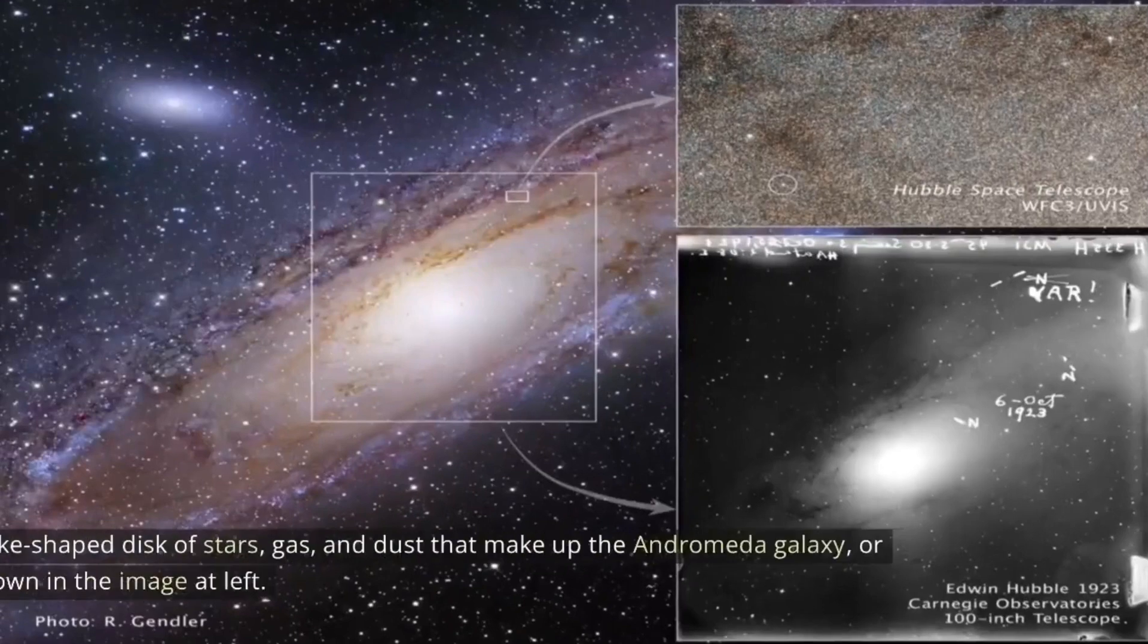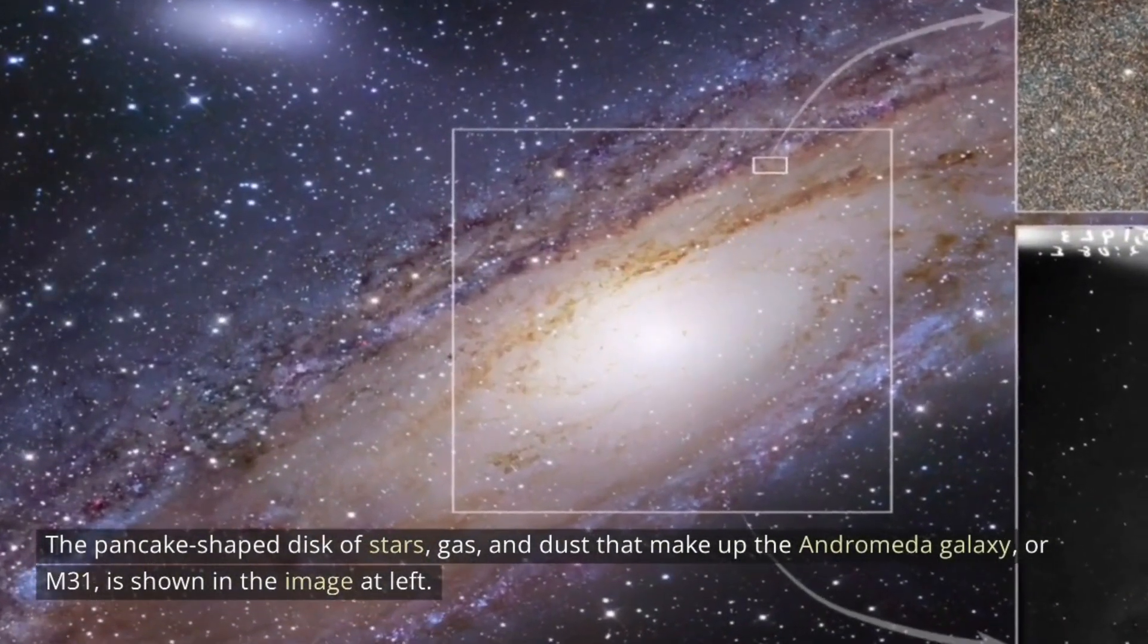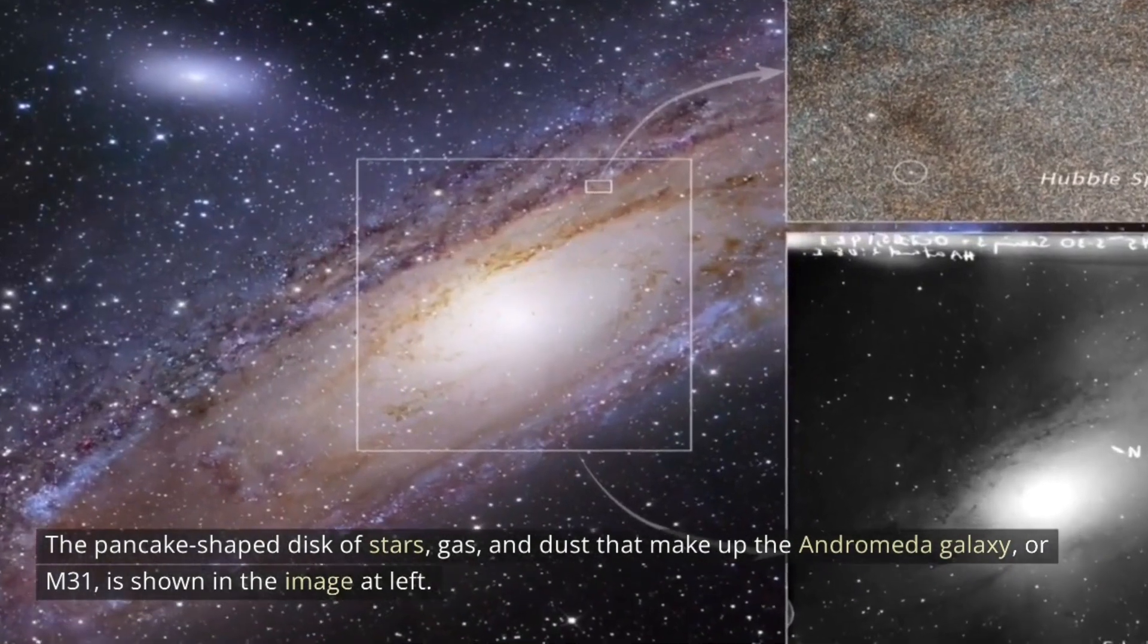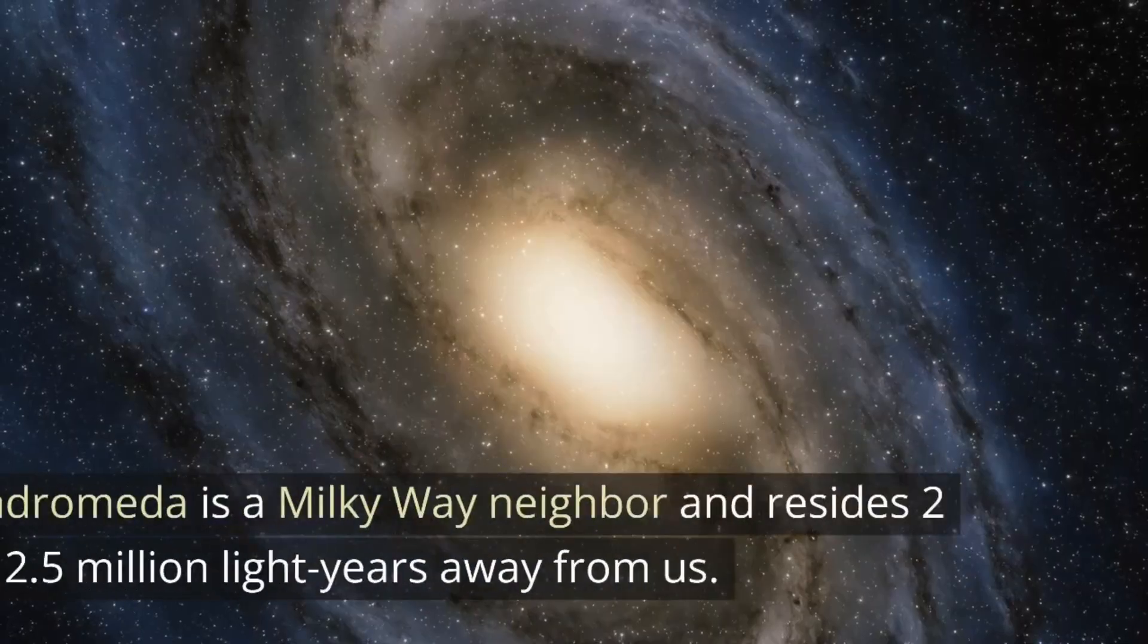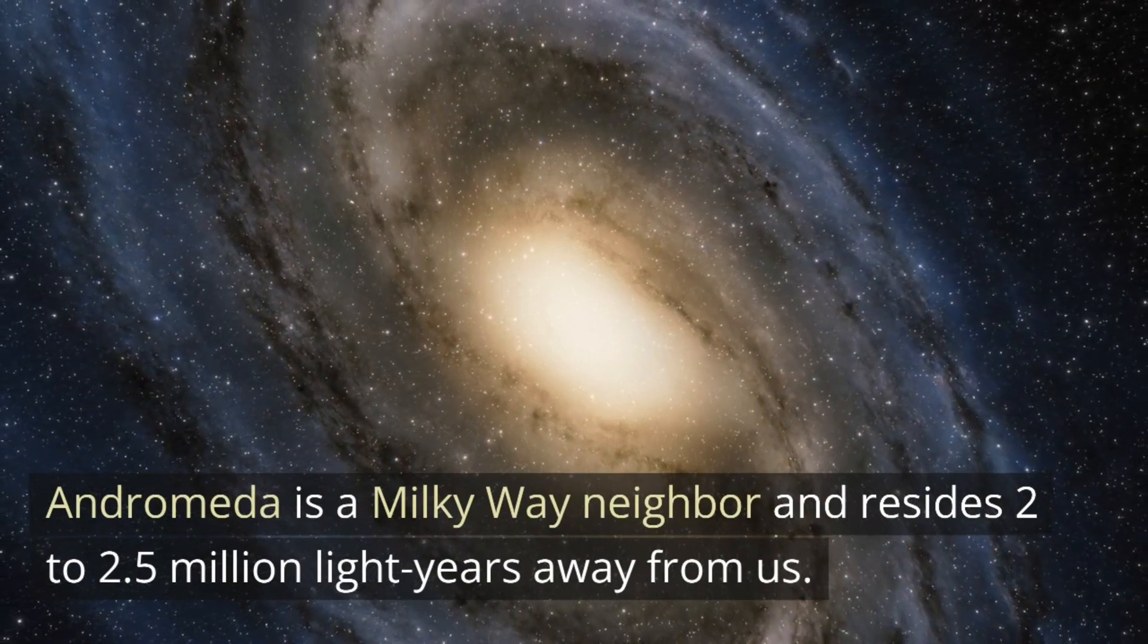The pancake-shaped disk of stars, gas, and dust that make up the Andromeda Galaxy, or M31, is shown in the image at left. Andromeda is a Milky Way neighbor and resides 2 to 2.5 million light-years away from us.